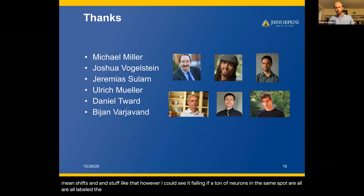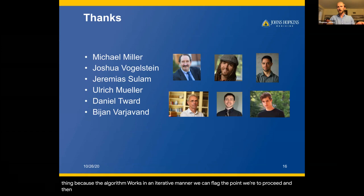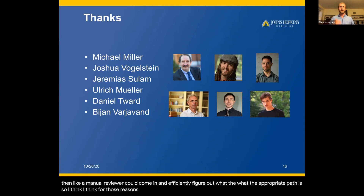The longer-term plan is to make this an interactive tool, because the algorithm works in an iterative manner. We can flag the points at which the algorithm is unsure where to proceed, and then a manual reviewer could come in and efficiently figure out the appropriate path. So I think for those reasons it should generalize to images of similar sparsity and similar quality.